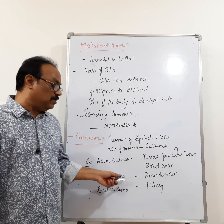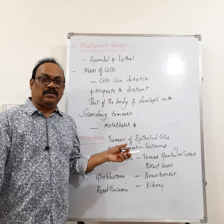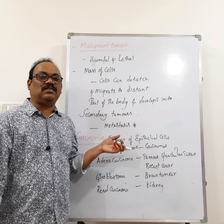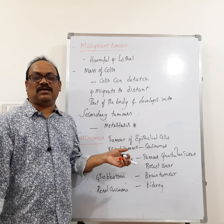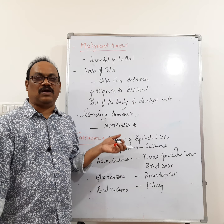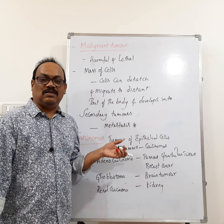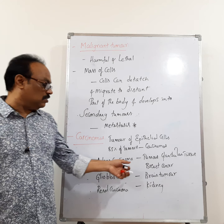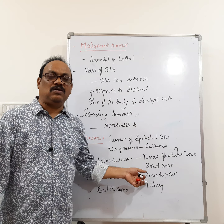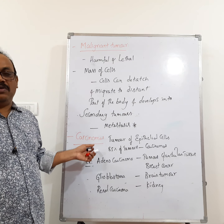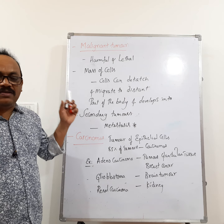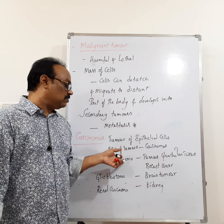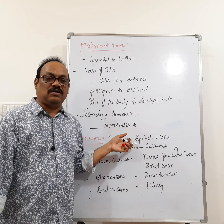Glioblastoma — if you remember from the nervous system, there are glial cells, which are neuro-glial supportive cells. When these cells divide abnormally and form tumors, we call it a brain tumor. So 85% of cancers are carcinomas.